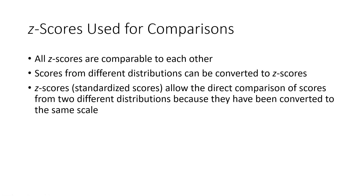Z-scores have some really important principles that make them especially useful. All z-scores are comparable to each other. If you take one from one distribution and one from a different distribution, you can compare their relative placement as if they had come from the same distribution. That means you can convert scores from any distribution into z-scores and compare them to each other, even when the original scales were different.